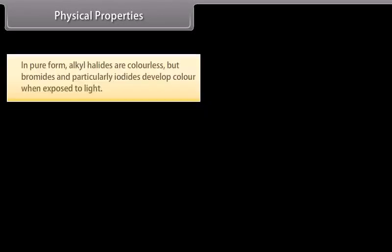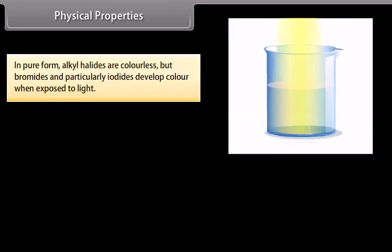Physical Properties. In pure form, the alkyl halides are colorless and bromides and particularly iodides develop color when exposed to light.